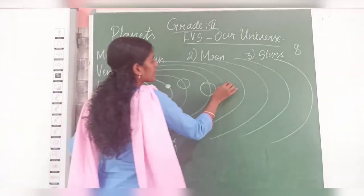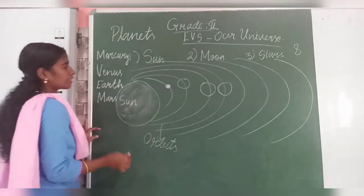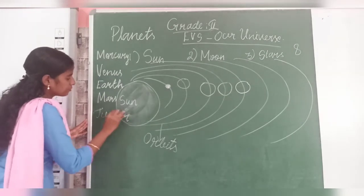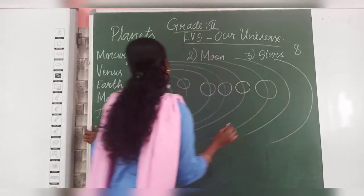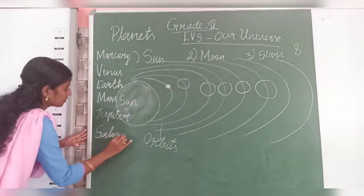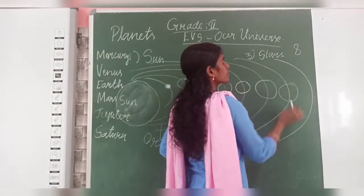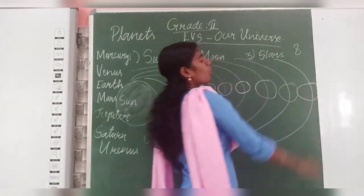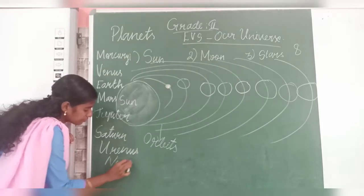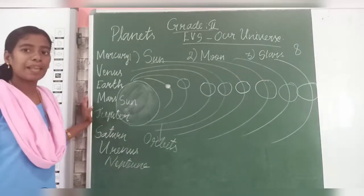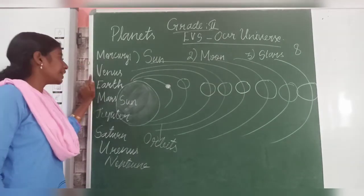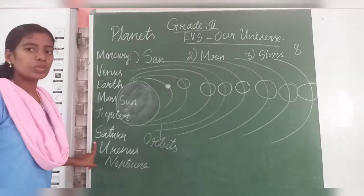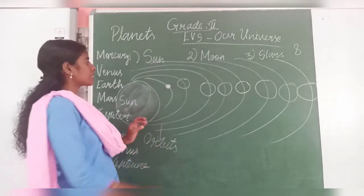The fourth planet is Mars. The fifth one is Jupiter. The sixth one is Saturn. The seventh planet is Uranus. And the last, eighth planet is Neptune. So these are the eight planets around the sun: Mercury, Venus, Earth, Mars, Jupiter, Saturn, Uranus, and Neptune. The sun is in the center.